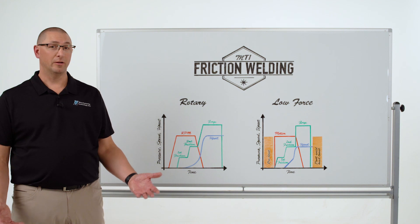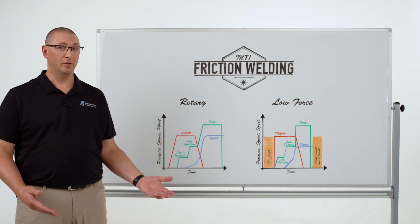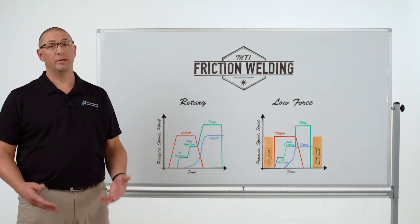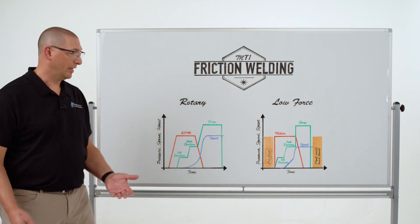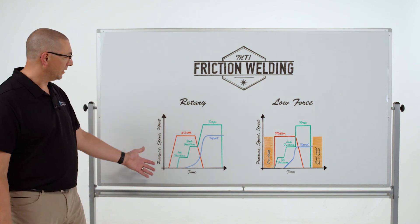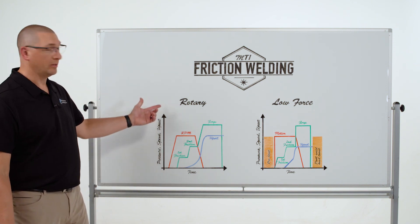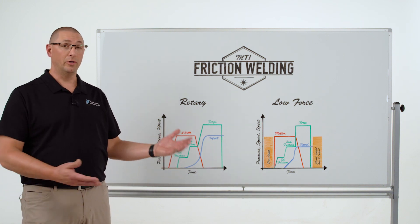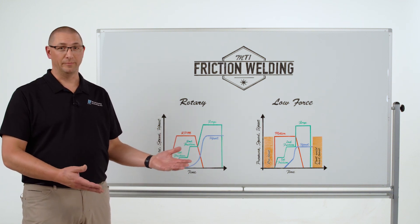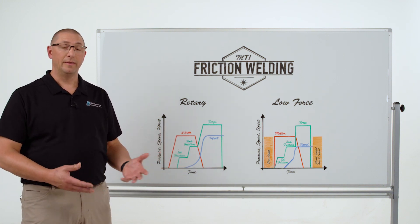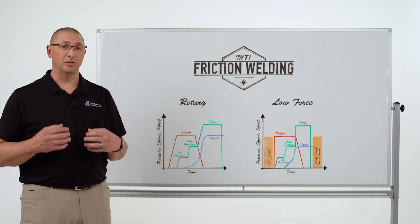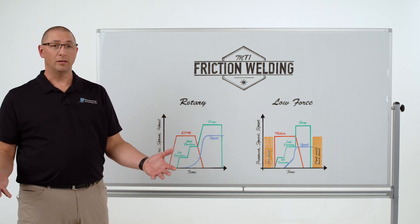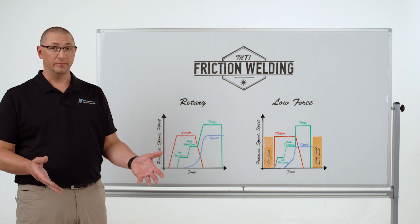We're going to talk about friction welding applications of drill pipe. When we refer to drill pipe, it could be oil well drill pipe, it could be water well drill pipe, or it could be rock drilling — all three applications. We show this as a direct drive cycle, but we call it rotary because the predominant use on the oil well drill pipe is inertia welding. The application is interesting because we have to put a lot of energy into this weld because it's a hardenable steel.